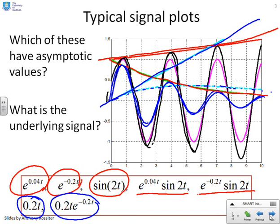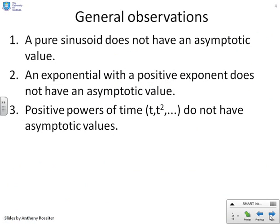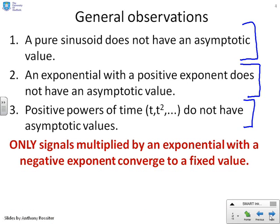So we've looked at some examples of different signals and you can see a few of them have asymptotic values, but most do not. A pure sinusoid does not have an asymptotic value — it oscillates forever. An exponential with a positive exponent goes off to infinity. Parabolas, ramps, and general polynomials do not have asymptotic values. The only signals with asymptotic values were those with an exponential with a negative exponent, on its own or multiplying something else — and those signals converge to zero.